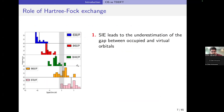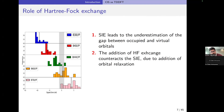This can be seen in this plot where we go from B30LYP — note it's not B3LYP, it's B30LYP with 30% Hartree-Fock exchange — and we systematically increase the amount of Hartree-Fock exchange from 30 to 40 to 50 to 60 to 70. The gray bar is the zero error bar, and you can see that the errors systematically decrease with the increase in Hartree-Fock exchange. The addition of Hartree-Fock exchange counteracts the self-interaction error because it adds orbital relaxation.